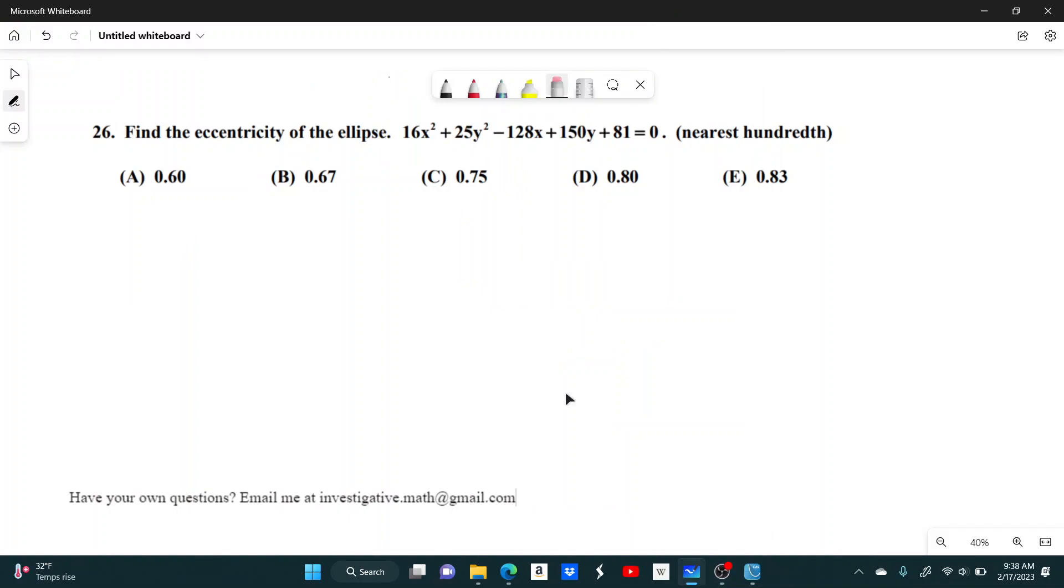Number 26, find the eccentricity of the ellipse 16x squared plus 25y squared minus 128x plus 150y plus 81 equals 0.